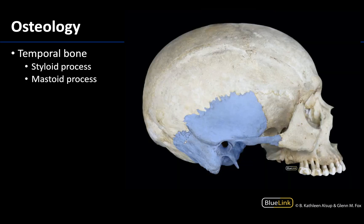Moving back to the lateral view to look at structures of the temporal bone, we're going to focus mainly on these posterior portions with two inferior projections. The first is wider and thicker — this is the mastoid process — and you can actually palpate your own mastoid process by feeling under your ears; that bump right underneath there is your mastoid process. This is going to be the superior attachment site for the sternocleidomastoid. Anterior to the mastoid process is the styloid process — much thinner, shaped more like a pin or stylus. It is not easily palpable and is often broken post-mortem in skull specimens because of how thin it is.